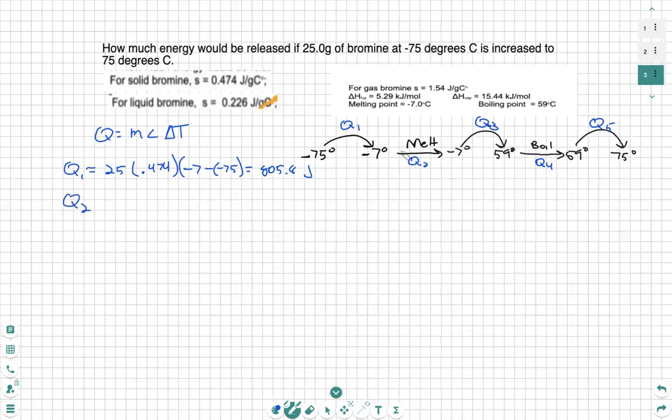For Q2, we have that phase change. In the phase change, we're going to take mass divided by, or multiplied by, 1 over the molar mass of bromine, which we should look up.